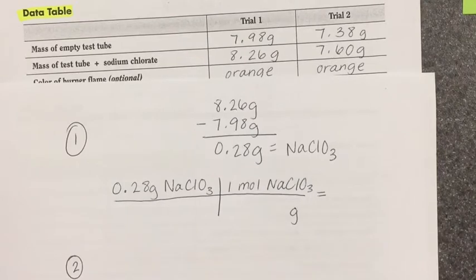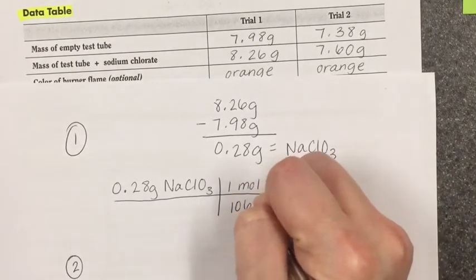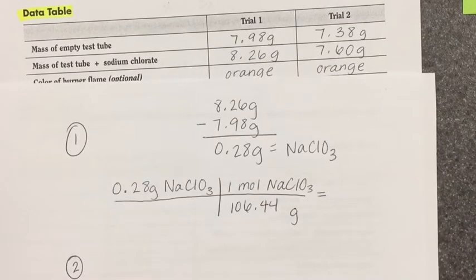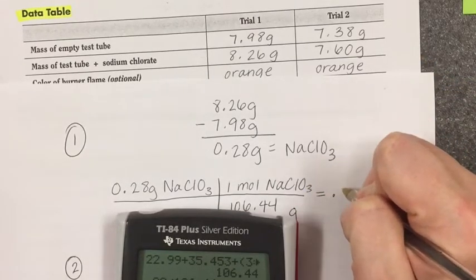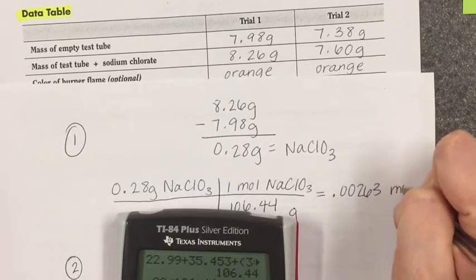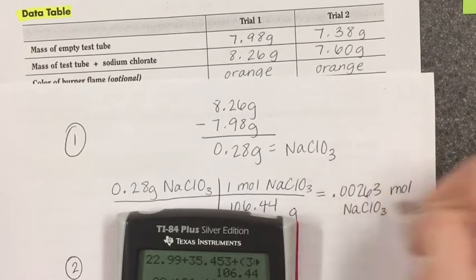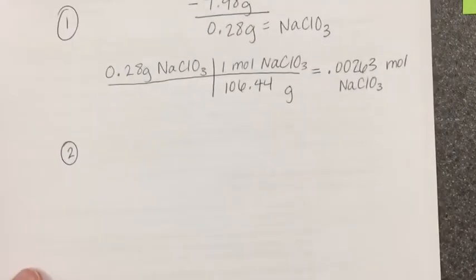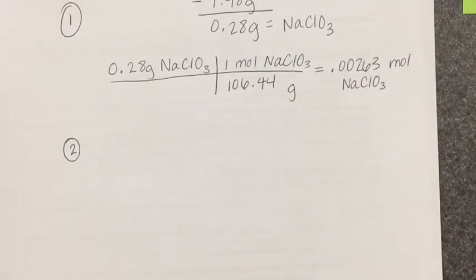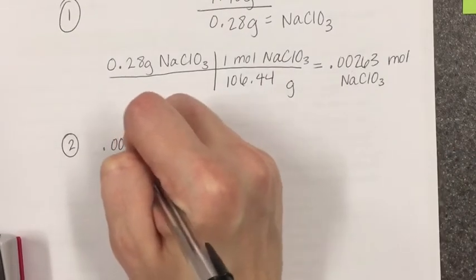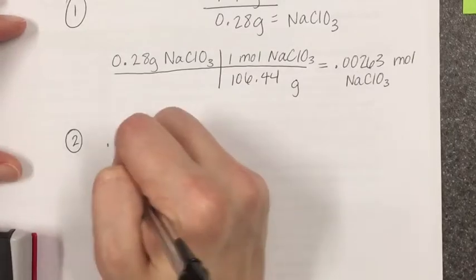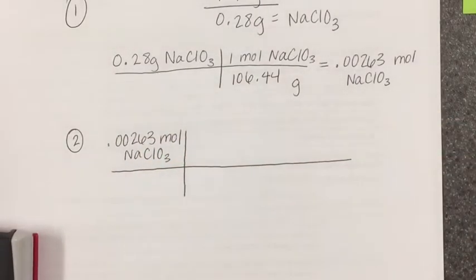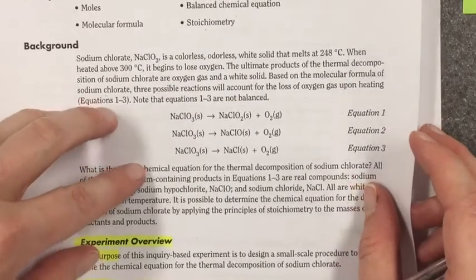So, when I go ahead and do this calculation, it turns out that we had 0.00263 moles of sodium chlorate in test tube one for trial one. So how am I going to do this to answer question number two? I'm going to start with 0.00263 moles of NaClO3. Now, in equation one, on the front, I believe you guys had to balance this.